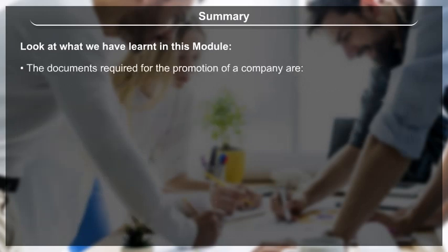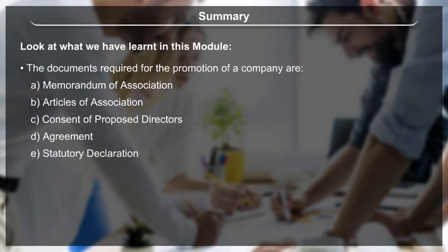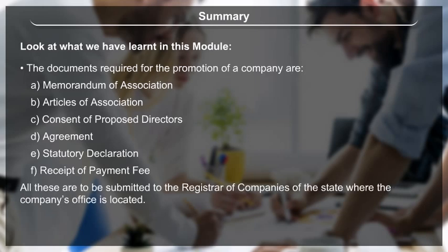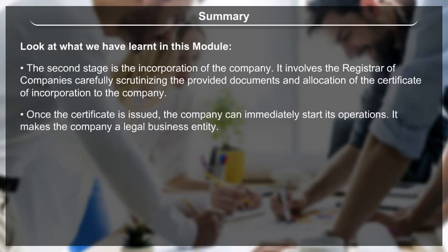The documents required for the promotion of a company are: A. Memorandum of Association, B. Articles of Association, C. Consent of proposed directors, D. Agreement, E. Statutory declaration, F. Receipt of payment fee. All these are to be submitted to the Registrar of Companies of the state where the company's office is located. The second stage, incorporation, involves the Registrar carefully scrutinizing the provided documents and allocating the Certificate of Incorporation. Once the certificate is issued, the company can immediately start its operations and becomes a legal business entity.